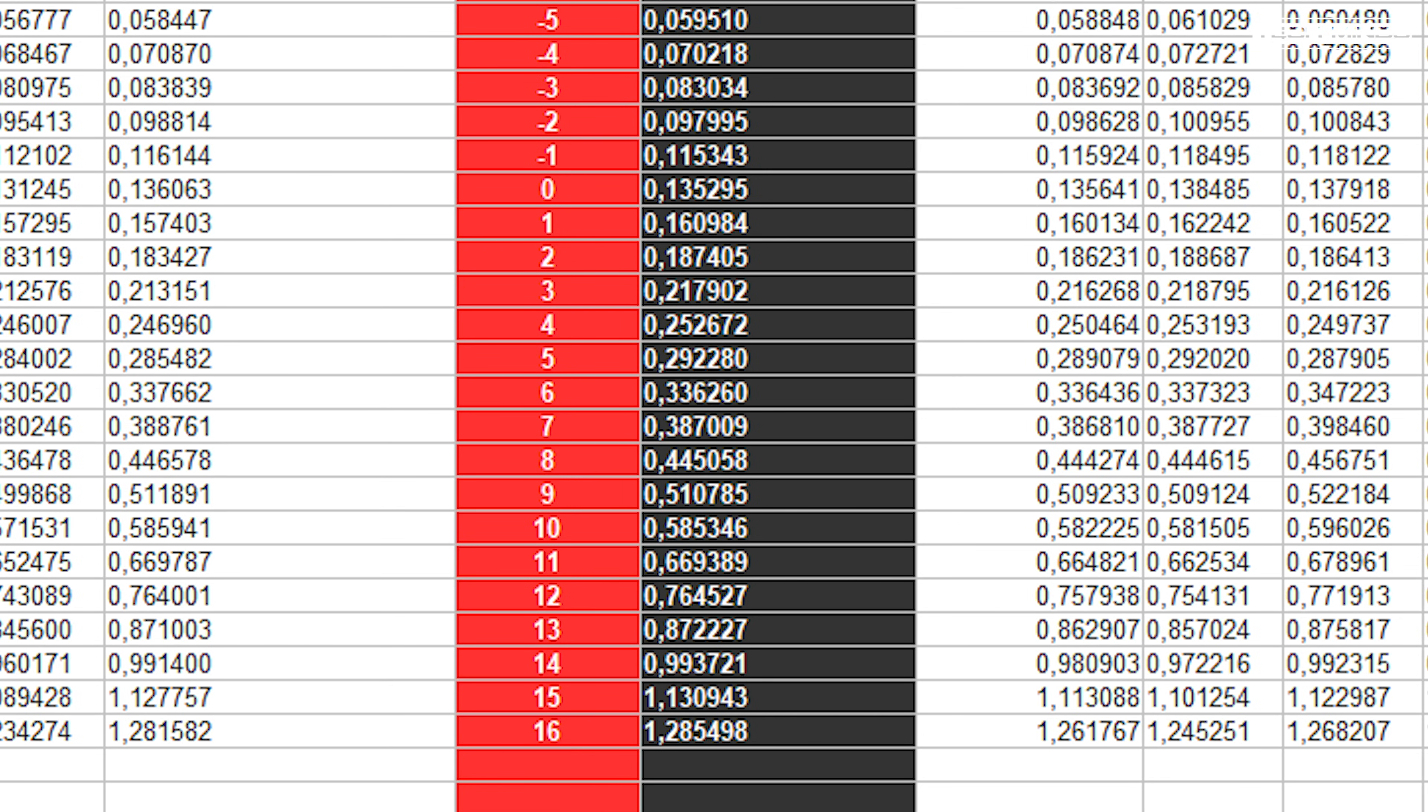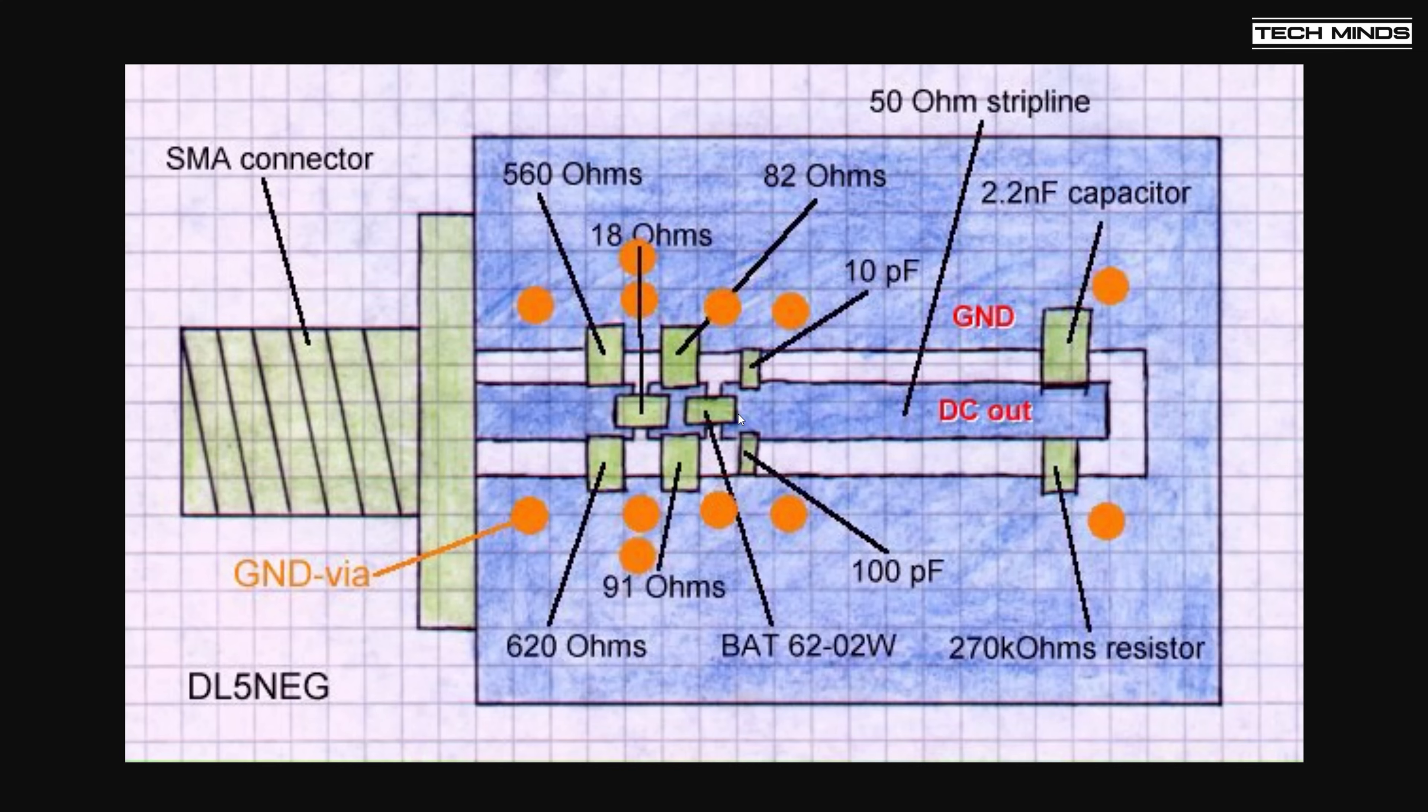I would also recommend using an attenuator, especially if you want to measure high power. Now the board layout has been published, so it's easy to replicate. Each square on this diagram represents one millimeter, and each component required has been labeled. Obviously, these are SMD components, and the board size is just 25 millimeters by 15 millimeters, so it's extremely small.